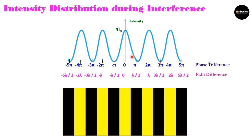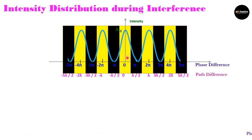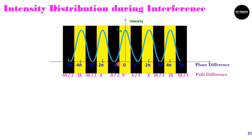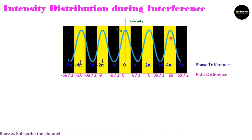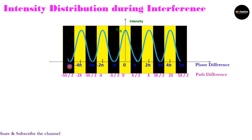This graphical representation matches with the actual interference pattern. Each maxima corresponds to the center of a bright band, and each minima corresponds to the center of a dark band. All maxima represent bright bands and all minima represent dark bands. In this way we can represent the intensity of interference graphically.